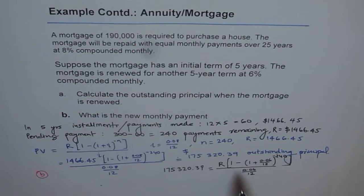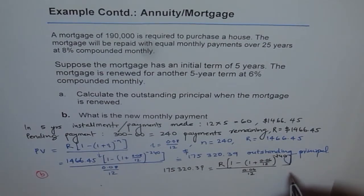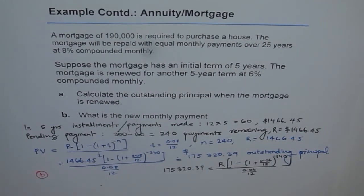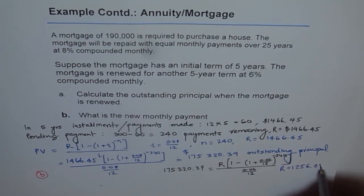To find R, multiply both sides and divide accordingly as shown in the previous video. When you do all this calculation, you get the regular payment R = $1256.05. Thank you.